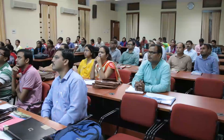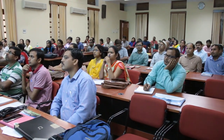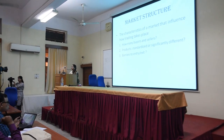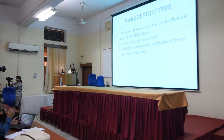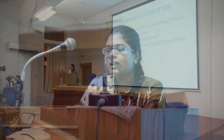First of all, what is a market? A market is a place where buyers and sellers interact with each other for goods and services. On this basis, the market is divided into two types: product market and factor market. Factor market is where buyers and sellers exchange factors of production, and product market is a market where goods or products are exchanged between buyers and sellers.